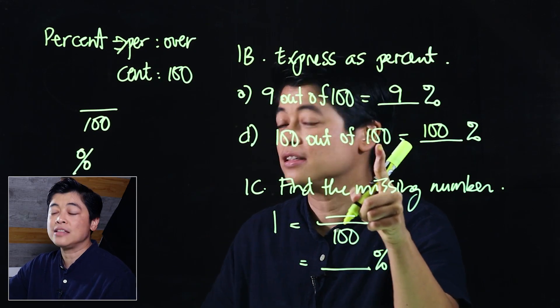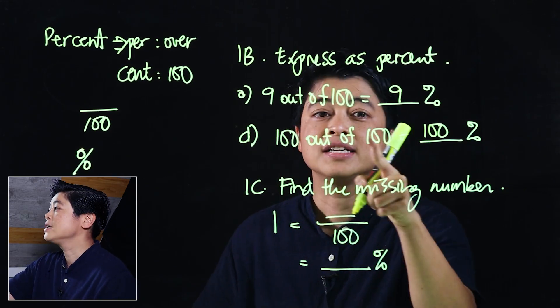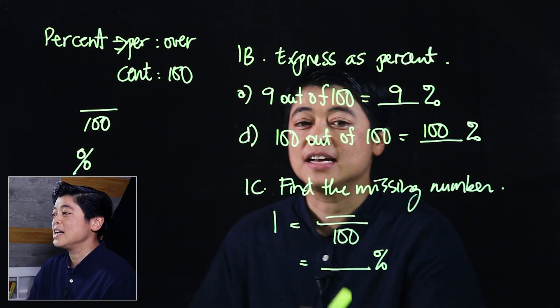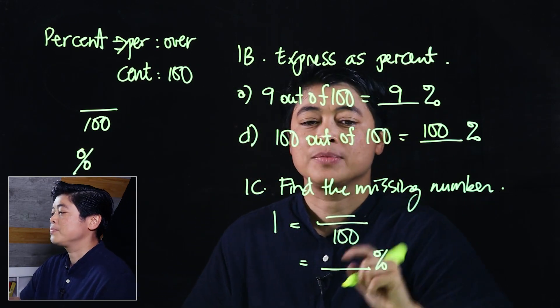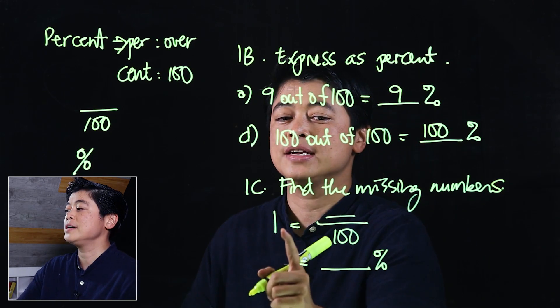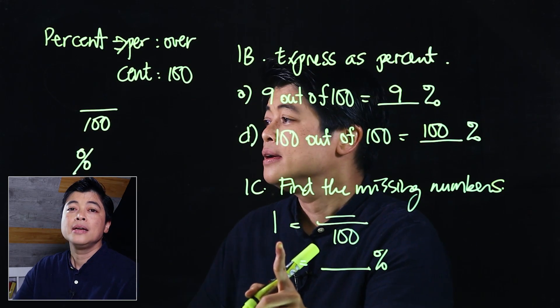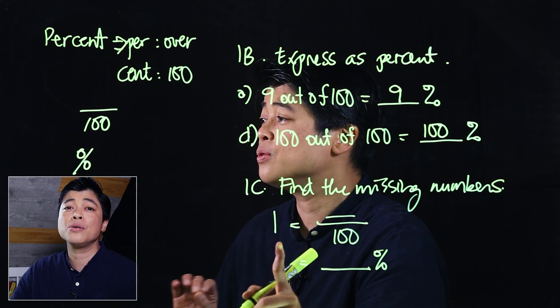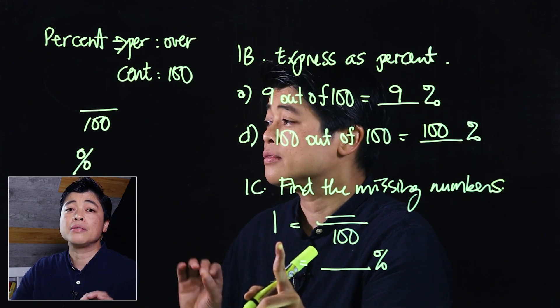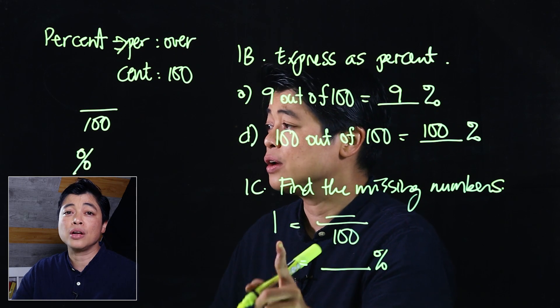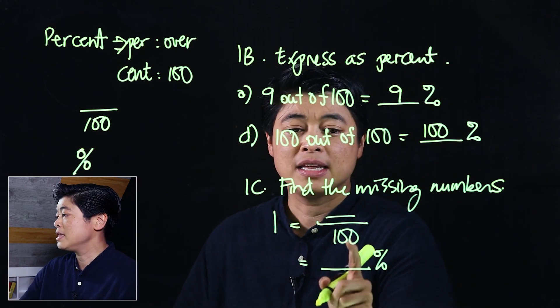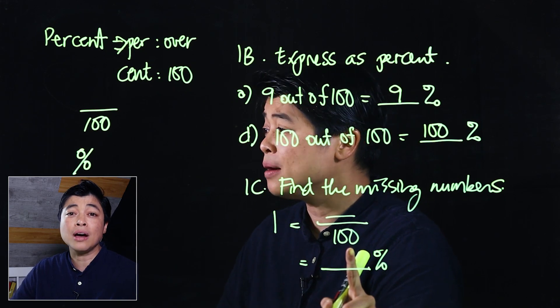In letter c, it says find the missing number. Here it says 1, but we need to remember from previous lessons that every whole number can be rewritten as a fraction where the numerator and denominator are the same. In this particular case, since the denominator is 100, the numerator must also be 100.